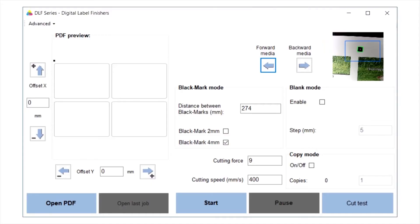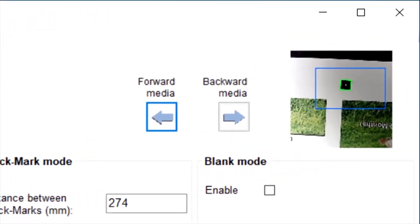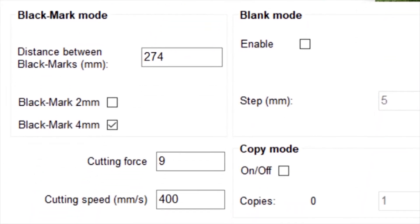Now jumping into the software, we just need to make sure that all our settings are correct. We have the right PDF loaded for our cut paths, the black mark that is printed on the media is inside the blue detection box, and all other settings are set for this media.